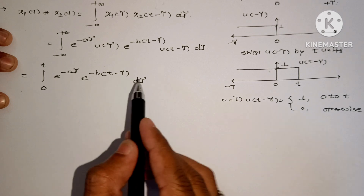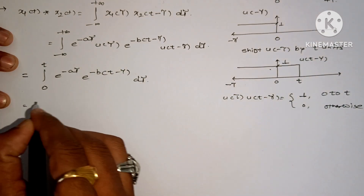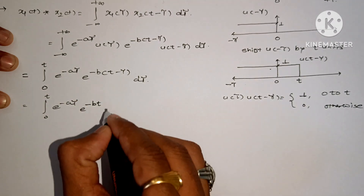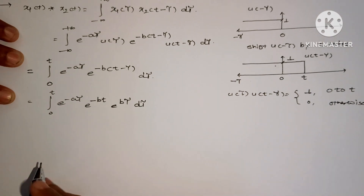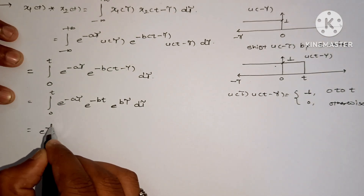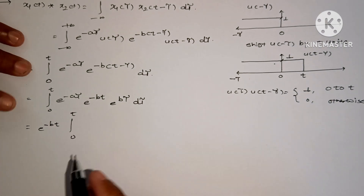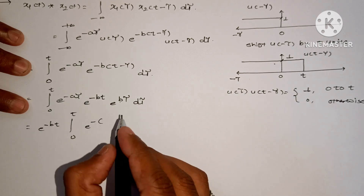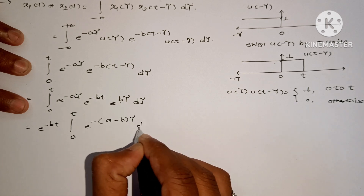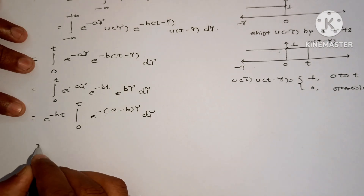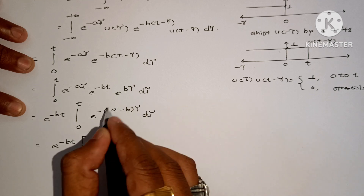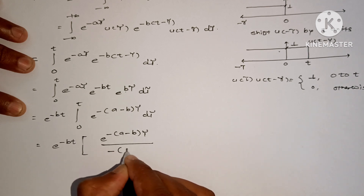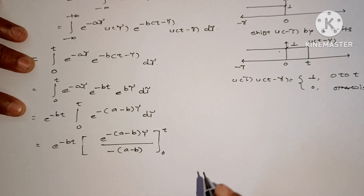Now we integrate with respect to τ. We can separate the constant term e raised to minus bt, leaving the integral from 0 to t of e raised to minus aτ times e raised to bτ dτ, which is e raised to minus bt times the integral from 0 to t of e raised to minus(a minus b)τ dτ. Integrating gives e raised to minus bt times e raised to minus(a minus b)τ divided by minus(a minus b), evaluated from 0 to t.